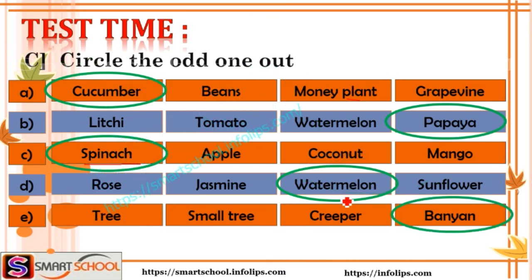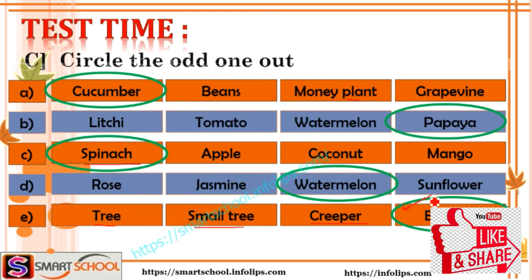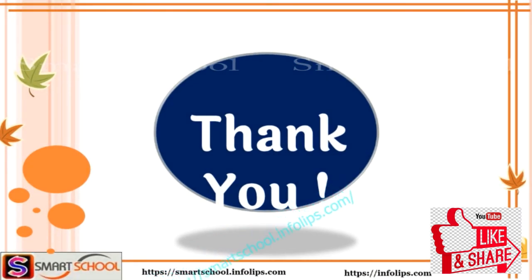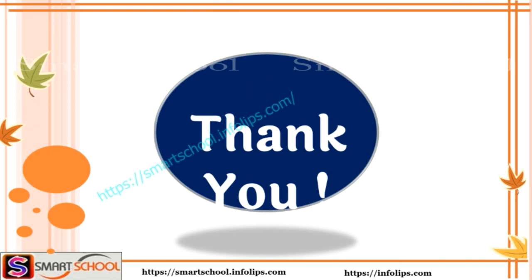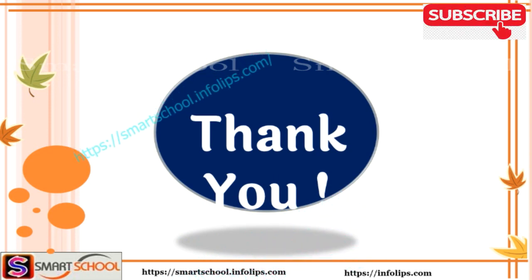The last odd one out is banyan, because tree, small tree, and creeper are types of plants, and banyan is a name of a specific tree. This is how we have learned what the types of plants are and taken a test. Thank you very much.